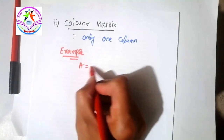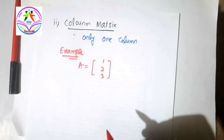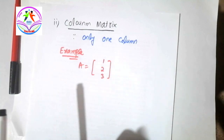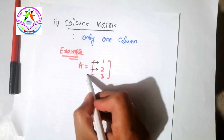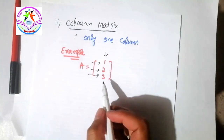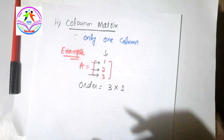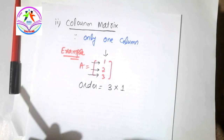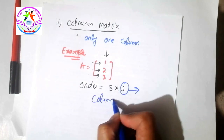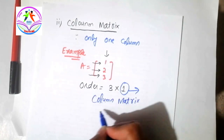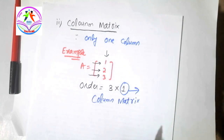For example, A is equal to the column vector [1; 2; 3]. You can see that the order of this matrix is 3×1 — it has a first row, second row, third row, and just one column. According to the column matrix condition, we have only one column, so we can say that this is a column matrix.